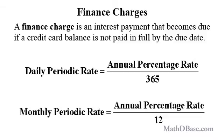To calculate the finance charge using the monthly periodic rate, divide the APR by 12, the number of months in a year, and round to the nearest ten thousandth.